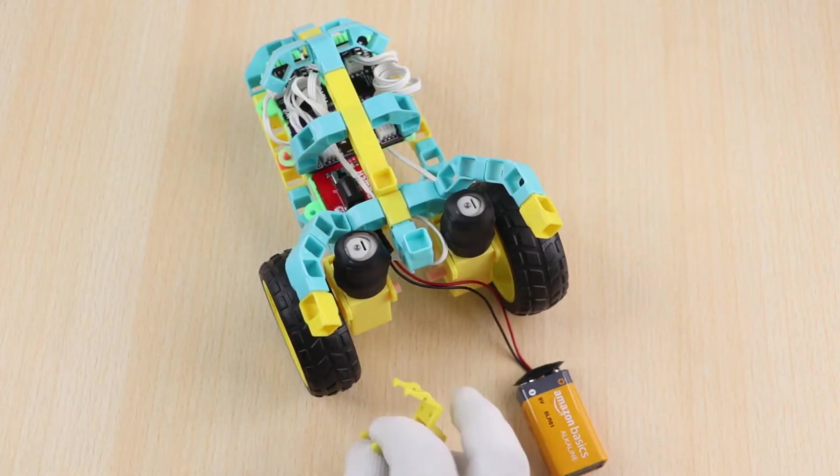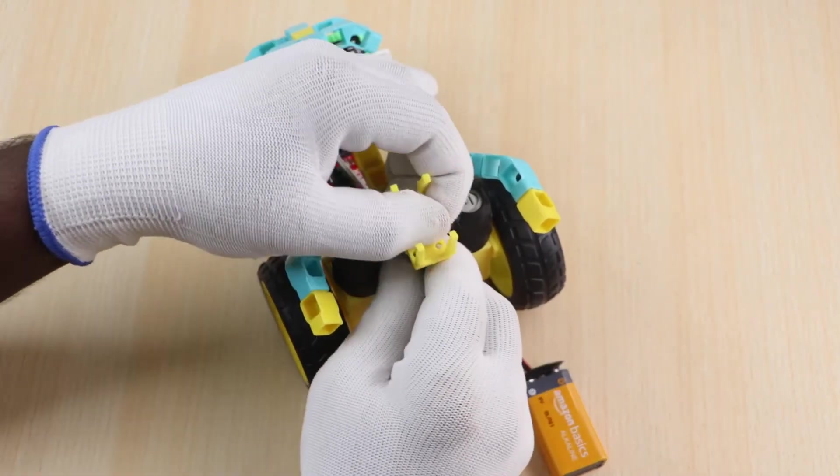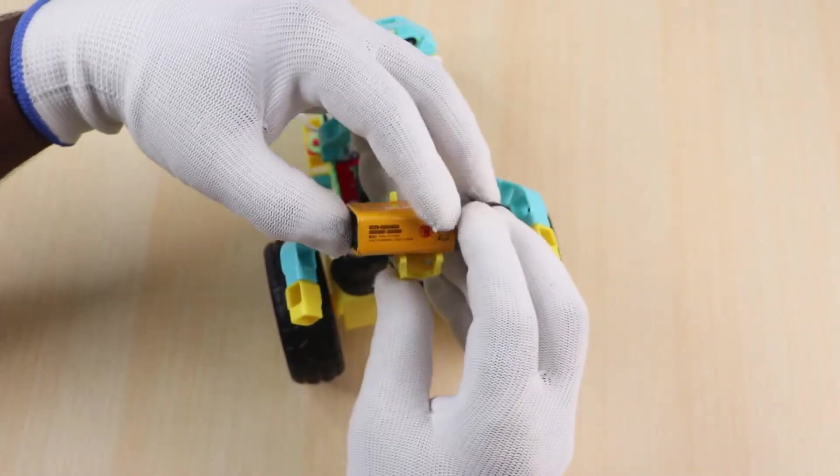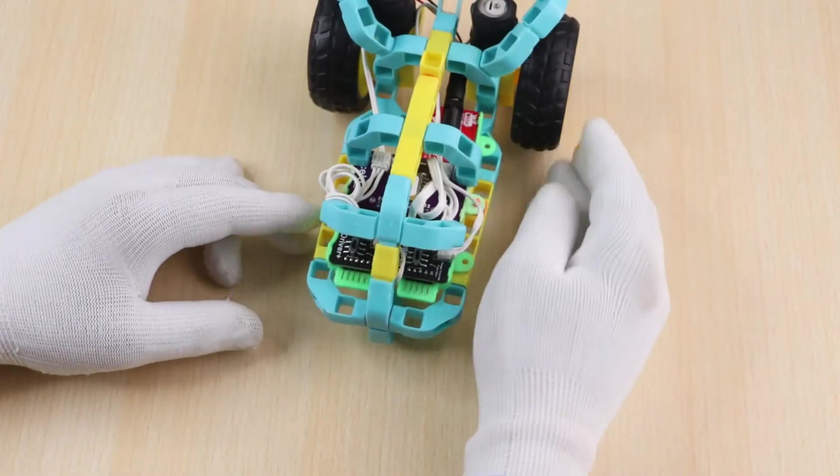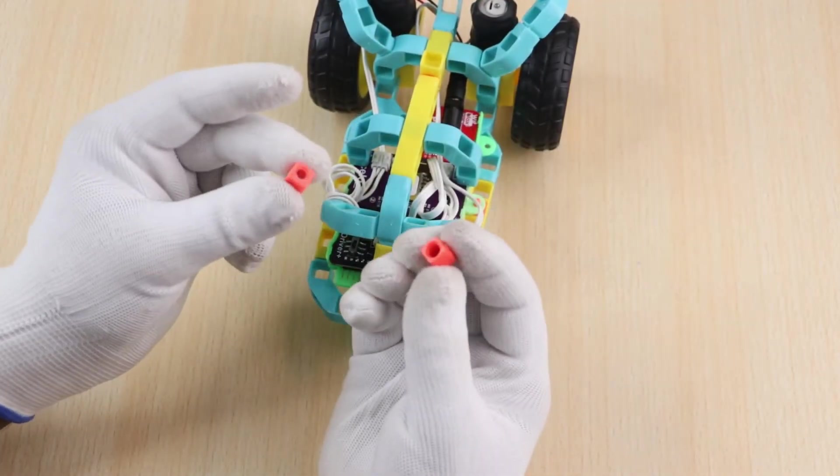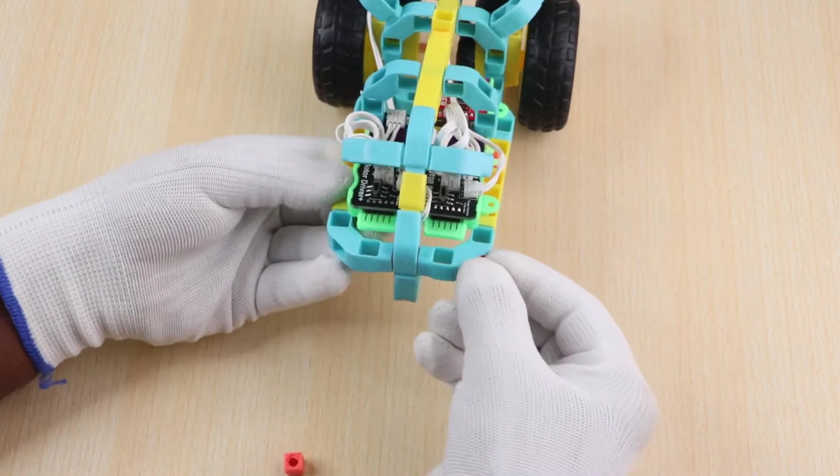Now take a battery holder and attach it as shown. Also take 2mm couplers and join them on the front part of the car.